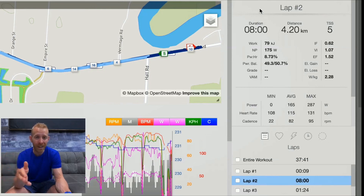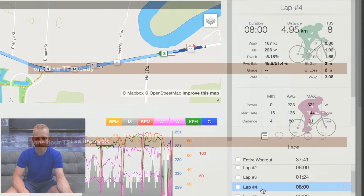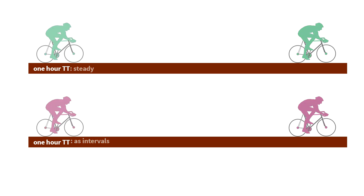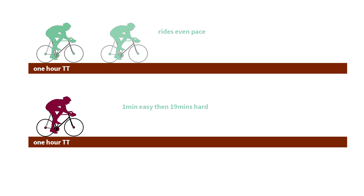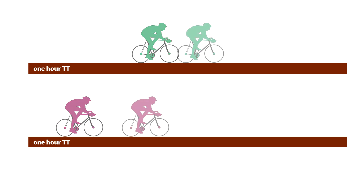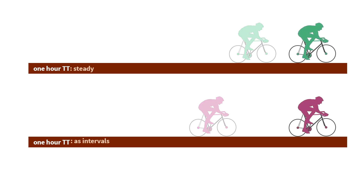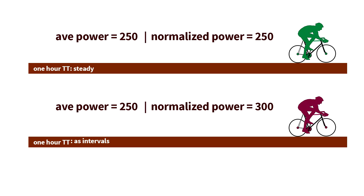Why does a low Variability Index influence speed this way? Here's an example: imagine a one-hour TT broken into three sections where in the first section you ride 19 minutes hard, then soft-pedal for one minute, repeated three times. To catch up with a rider who rode a steady hour, you'd have to go very hard in those 19-minute segments. Your Normalized Power would be huge even though your Average Power might be the same.